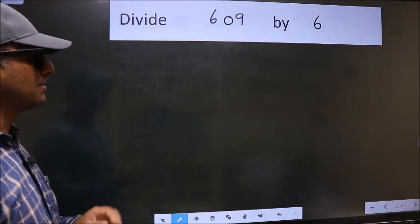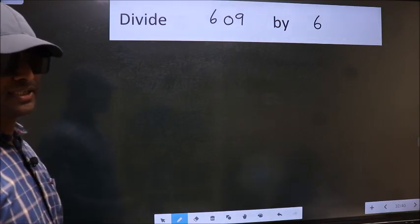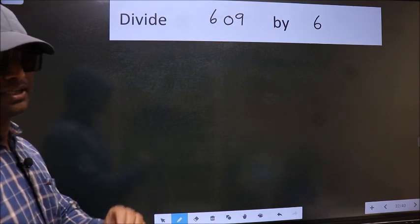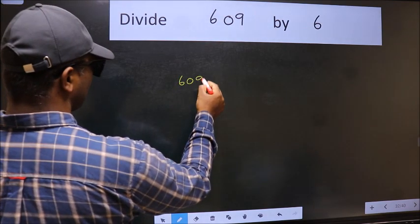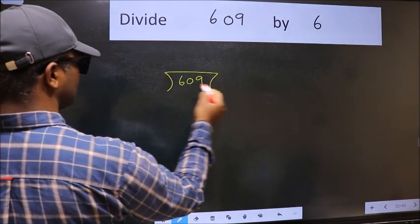Divide 609 by 6. To do this division, we should frame it in this way. 609 and 6 here.